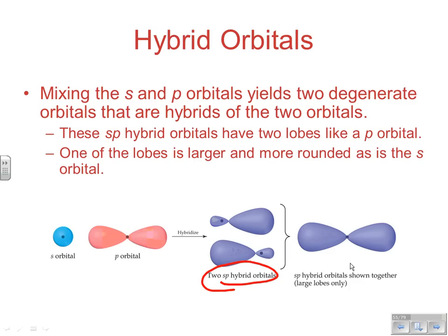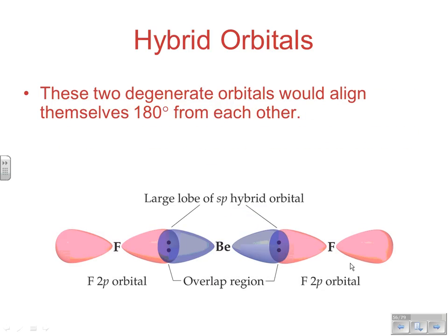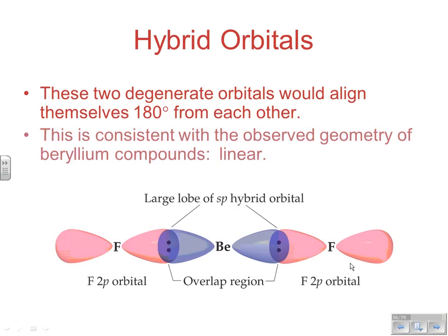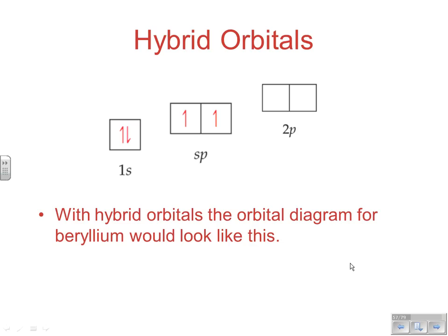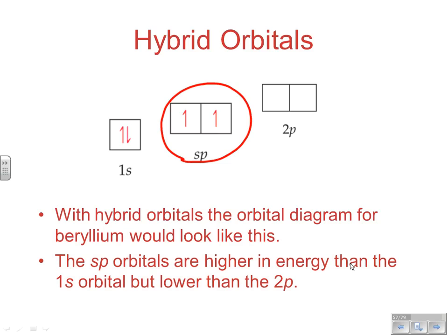The sp hybrid orbitals look somewhat similar to a p orbital, but one lobe is significantly larger than the other. These two degenerate orbitals align 180 degrees apart, forming the linear BeF₂ molecule — consistent with what we observe. So 1s and 1p combine to make the sp hybrid set, with energy slightly higher than the original 2s and slightly lower than the original 2p.